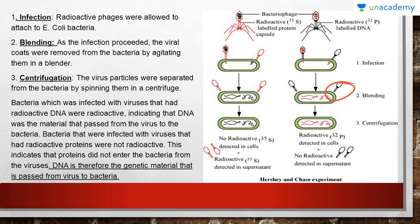The mixture was vigorously agitated to remove the outer covering of the bacteriophage. Next, in centrifugation, the virus particles were separated from the bacteria by spinning in a centrifuge. Since the mixture contained both the coats of the bacteriophage and the bacteria, centrifugation was used to separate them. They observed that bacteria infected with viruses that had radioactive DNA were radioactive, indicating that DNA was the material that passed from the virus to the bacteria.